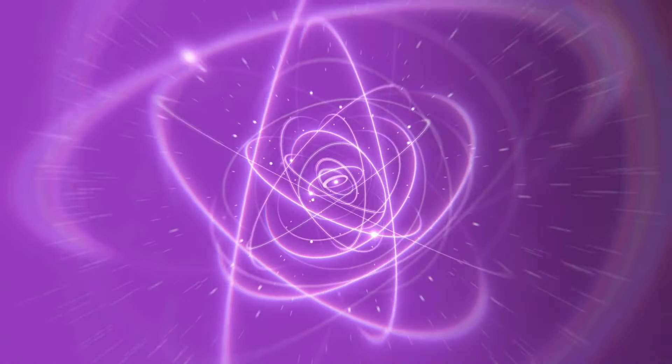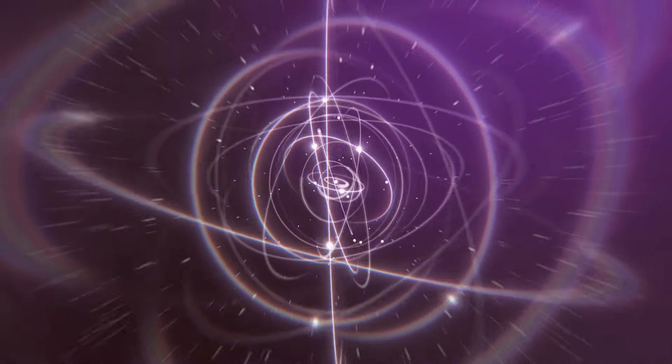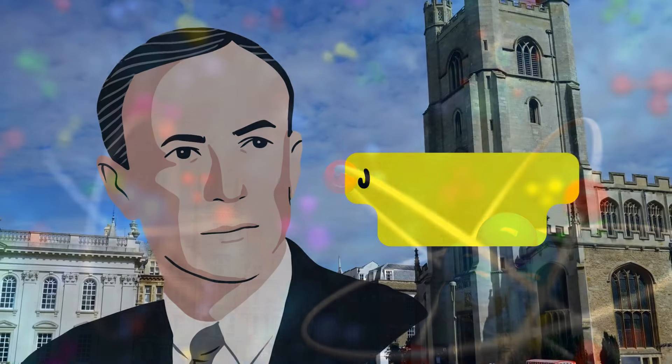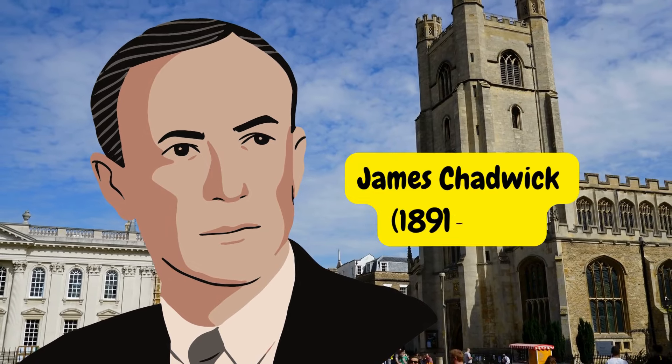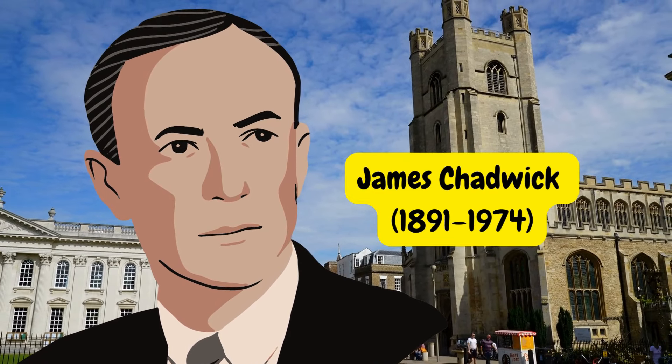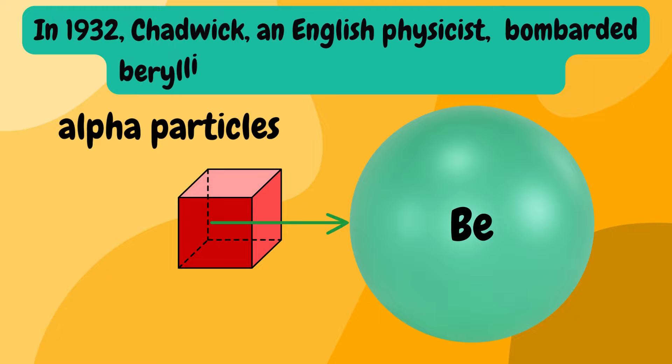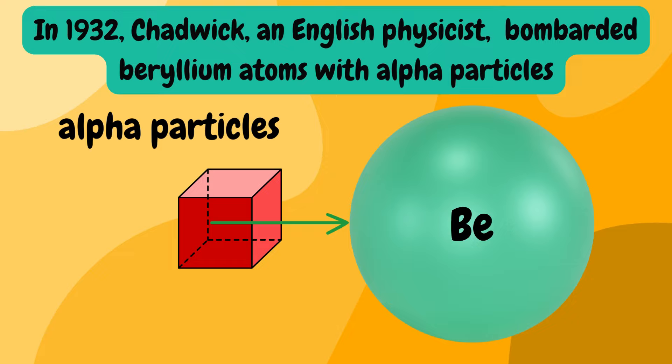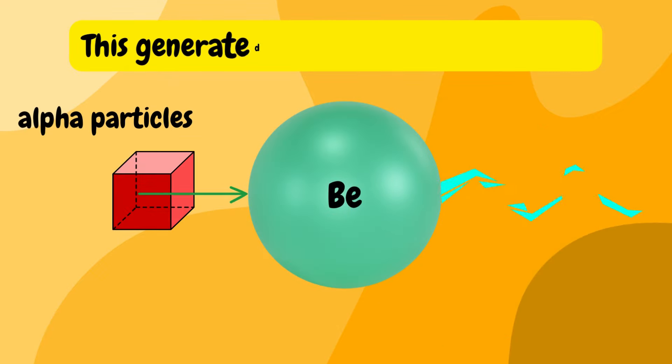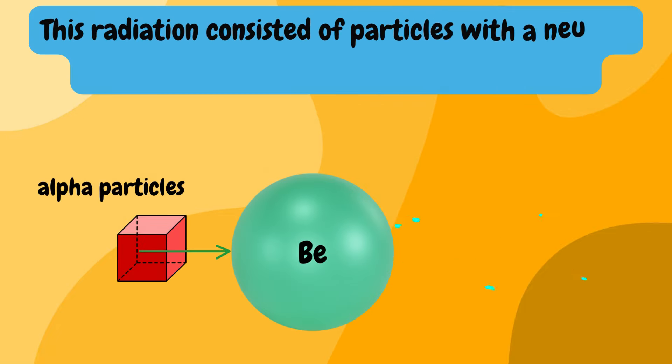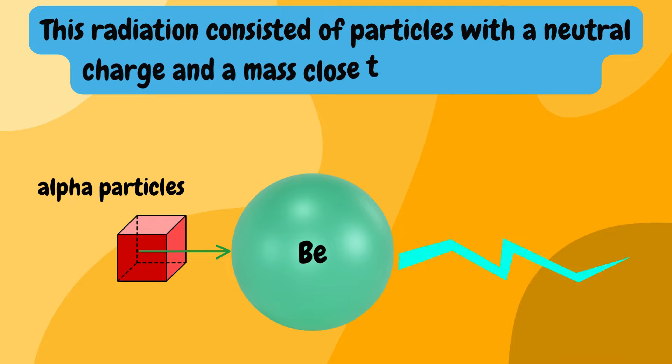Discovery of the neutron. In 1932, James Chadwick (1891 to 1974), an English physicist, conducted an experiment where beryllium atoms were bombarded with alpha particles, resulting in the generation of an unidentified radiation. Chadwick identified this radiation as consisting of particles with a neutral charge and a mass close to that of a proton.